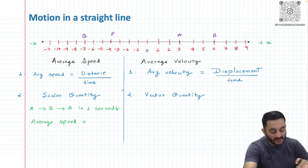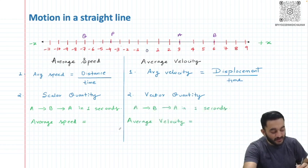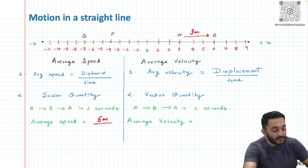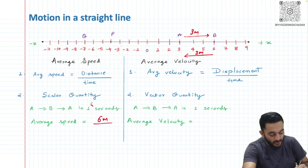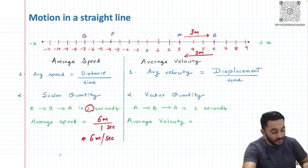We have already calculated that our total distance is going to be 6 meters because A to B is 3 meters and B to A is 3 meters. It is a scalar quantity, so we don't have to worry about positive or negative signs. For one second, the average speed is 6 meters per second.